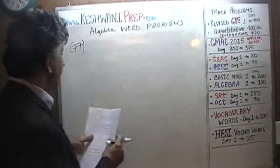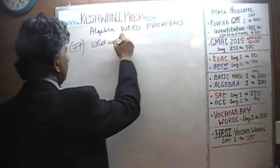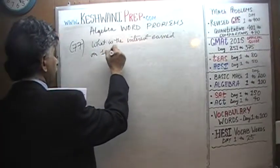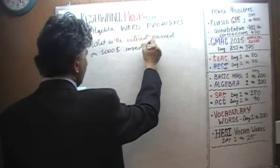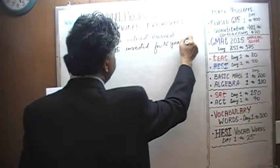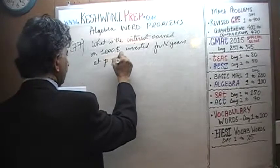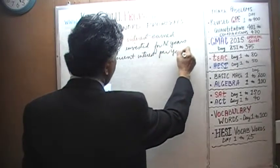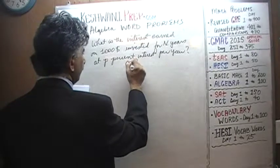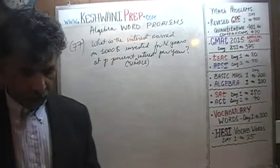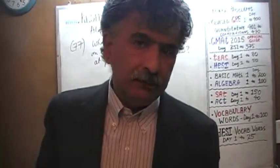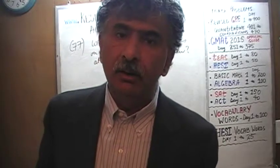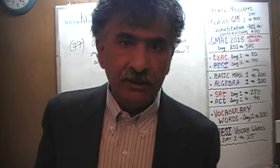The question is: what is the interest earned on $1,000 invested for N years at P% simple interest per year? In other words, what is the amount of interest we are going to earn if we invest $1,000 for a number of years at P% — how much will we earn at the end of the N years period? Let's find out.